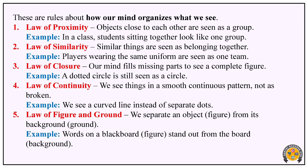Then, the Law of Closure. Law of Closure is simple. If a part is missing, our mind fills the missing part to see a complete figure. For example, a dotted circle is still seen as a circle. Even if we draw a circle as dots, we see it as a full circle. That is the Law of Closure — we fill in the missing parts in our mind to see a complete figure.